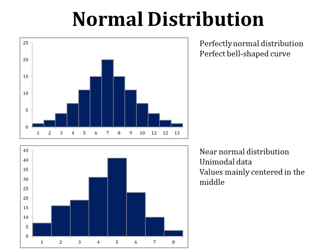There is also a near-normal distribution, which is not perfectly normal but is unimodal with values mainly centered in the middle. As we move away from the middle, the probability of finding a value gradually decreases. Comparison of averages tests can be applied to near-normal distributions as well, since it is sometimes very hard to find a perfectly normal curve.